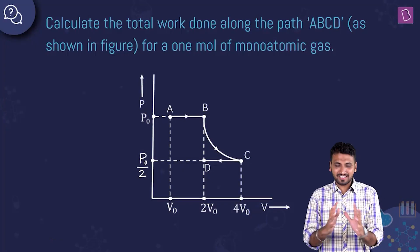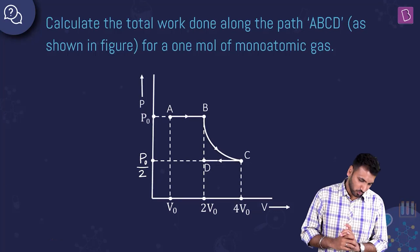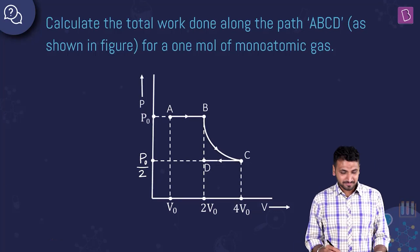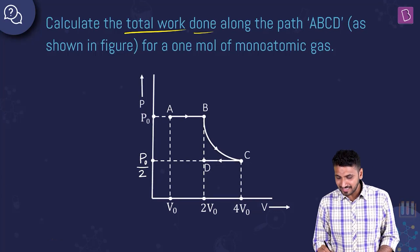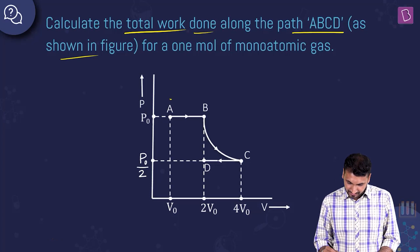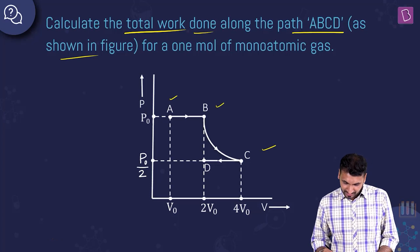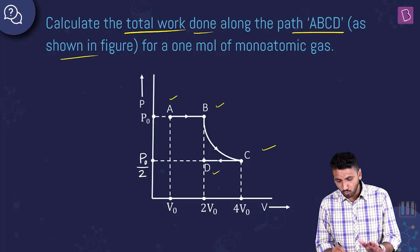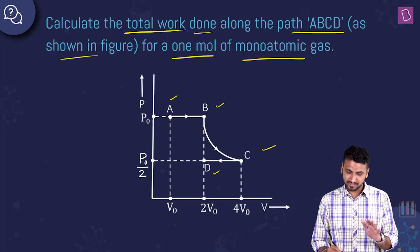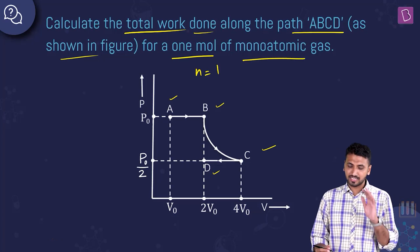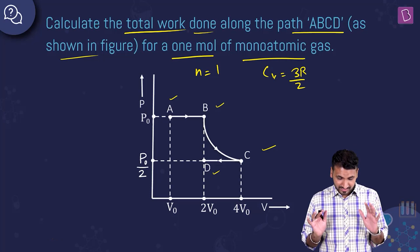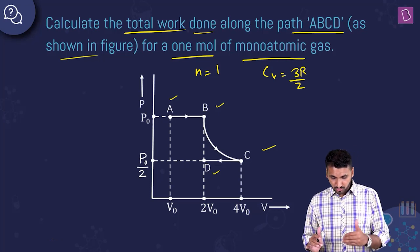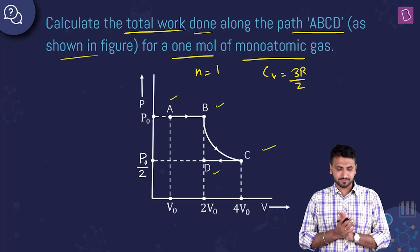Now we have a graphical question from thermodynamics. Calculate the total work done along the path ABCD as shown in the figure, for one mole of monoatomic gas. N is 1 and for monoatomic gas, Cv is 3R/2. The graph shows P₀, P₀/2, V₀, 2V₀, and 4V₀ on a PV graph.